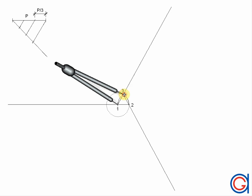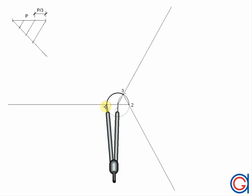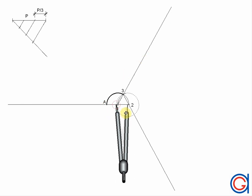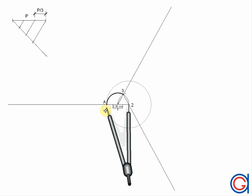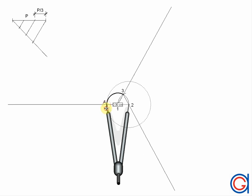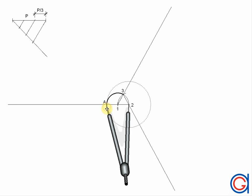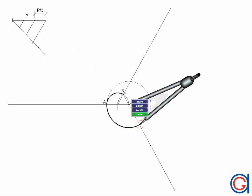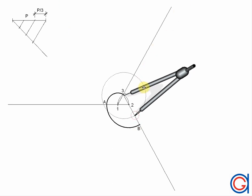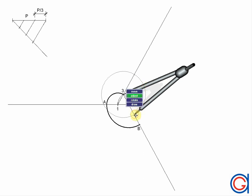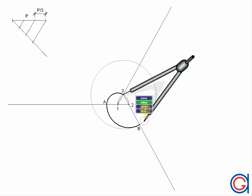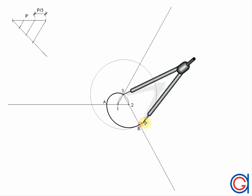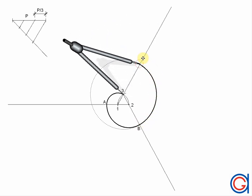Now we are ready to draw the spiral. With our compass centered on point one and length one–three, we scribe an arc to the left until it cuts the adjacent prolongation at point A. With our compass centered on point two and set to length two–A, we scribe an arc down until it cuts the prolongation at point B. Then with our compass centered on point three and set to length three–B, we scribe an arc until it cuts the prolongation at point C.